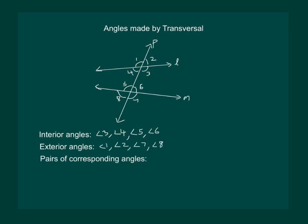Next, we understand the pair of corresponding angles. Angle 2 and angle 6 are corresponding angles. Similarly, angle 1 and angle 5 is another pair of corresponding angles. Angle 7 and angle 3 is another pair and angle 8 and angle 4 is another pair of corresponding angles.